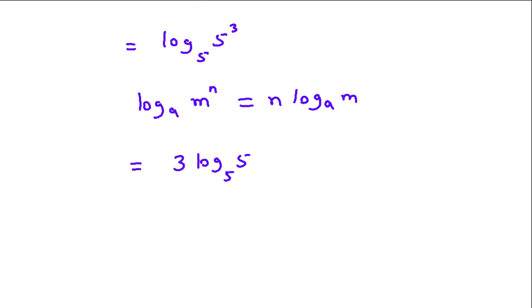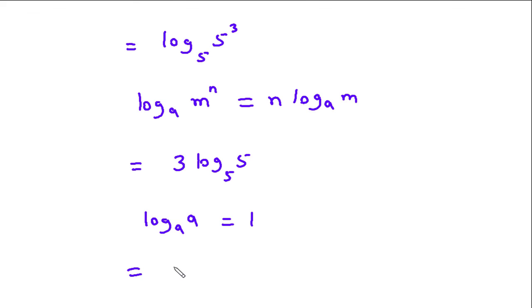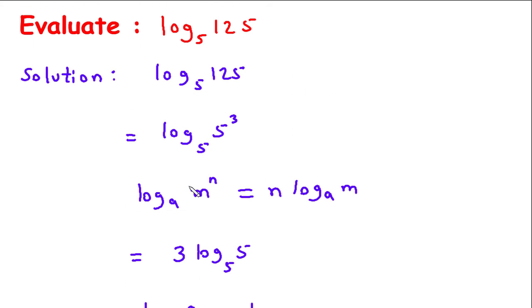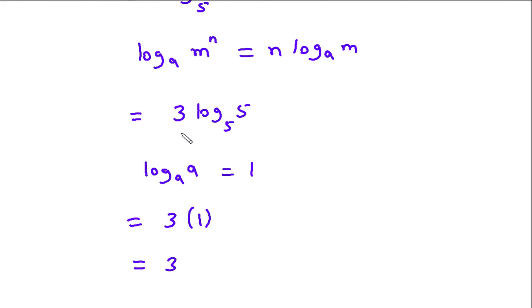Now we have one more formula for logarithm: log of a to the base a is equal to 1. So this will be 1, giving us 3 into 1, which is equal to 3. So the final answer is 3. Log of 125 to the base 5 is equal to 3.